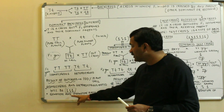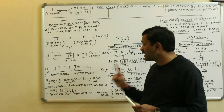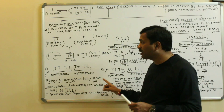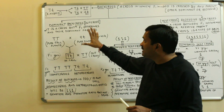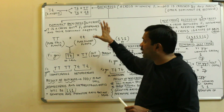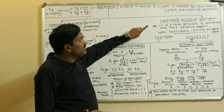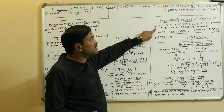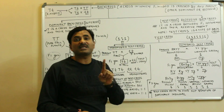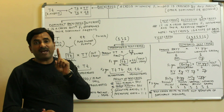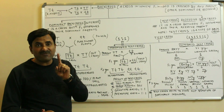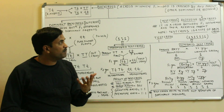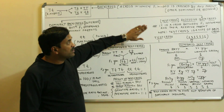One important thing to remember is that in the out cross the genotypic and phenotypic ratios are not the same, because all individuals are tall but their genotypes differ. This is the dominant back cross or out cross. Now the recessive back cross is a cross between the F1 offspring and their recessive parent — when the F1 generation is crossed by the recessive parent, such a cross is called the test cross or recessive back cross.